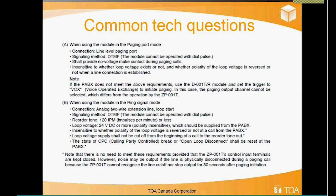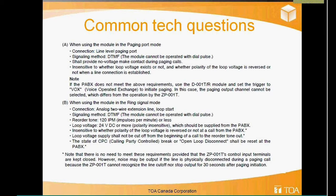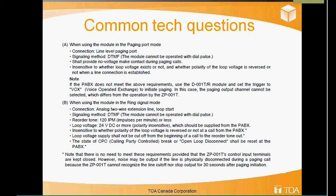If you just want to do an all-call, there's no point using the ZP module. Use a spare D module input slot instead — it accepts line level from the phone system without needing a contact closure, and once it hits that D module it will engage as an all-call and allow you to page that way.